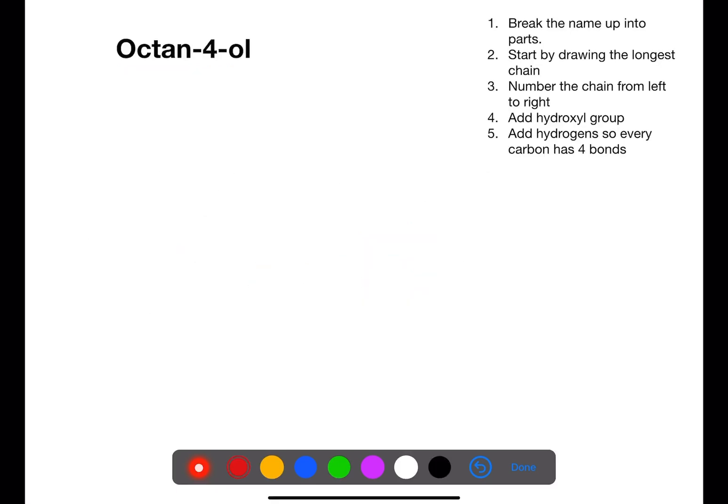In this example we have octan-4-ol. So we have eight carbons. If we number from left to right and then put our OH group on number four, then go around and fill in hydrogens so that each of the carbons has four bonds.